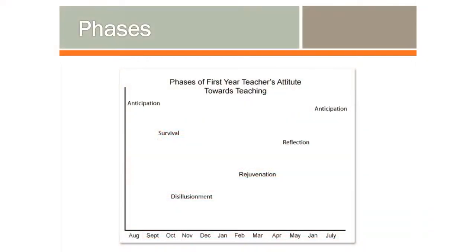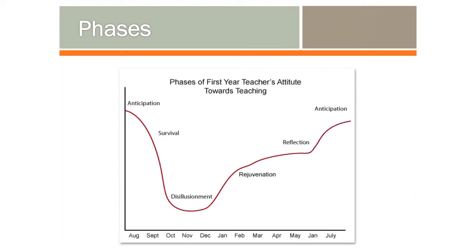Let's take some time to look at the phases of our first-year teacher. If you remember, they first started out in the anticipation stage, then moved to survival, then down to disillusionment. Now they are going to rejuvenation, reflection, and then anticipation for next year.